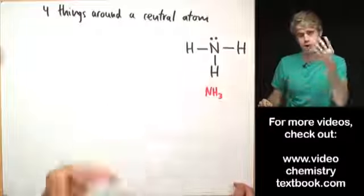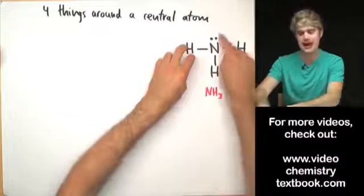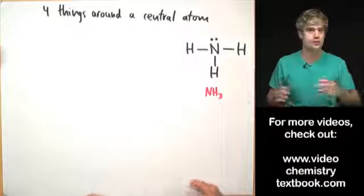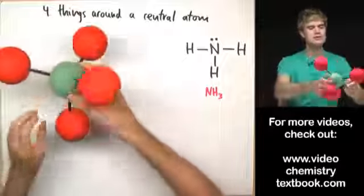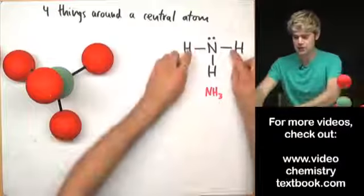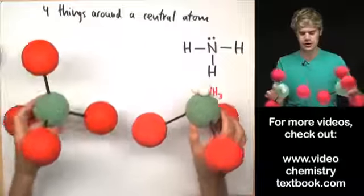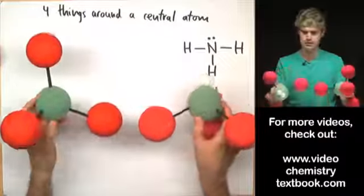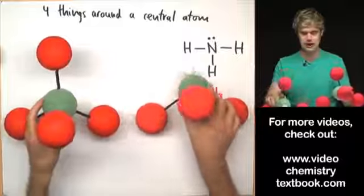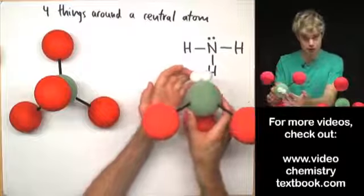NH3 also has four things around a central atom, but not all of them are bonds to other atoms. There are three bonds and then a fourth thing that's a lone electron pair. Going back to the tetrahedral shape — that's how we arrange four things around a central atom when they're all other atoms. But in NH3, they're not all other atoms. NH3 is going to end up having a shape called trigonal pyramidal. Look at how similar it is to the tetrahedral shape — it's just that the atom that was up top when we had four atoms around the central atom has been replaced by an unshared electron pair.